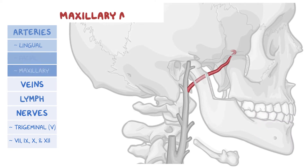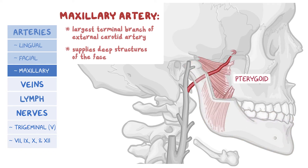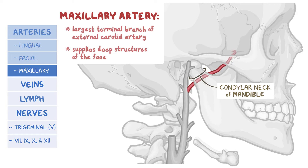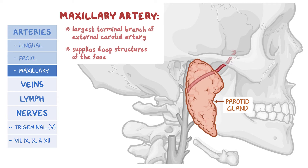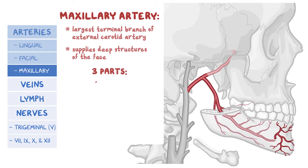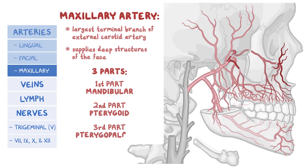Third, the maxillary artery, which is the largest terminal branch of the external carotid artery, supplies deep structures of the face, including the mandible, pterygoid, infratemporal fossa, and segments of the pterygopalatine fossa. It arises posteriorly to the condylar neck of the mandible within the parotid gland, then exits and passes anteriorly between the ramus of the mandible and the sphenomandibular ligament within the infratemporal fossa. As it passes through the infratemporal fossa, the maxillary artery can be divided into three parts: first, the mandibular part; second, the pterygoid part; and third, the pterygopalatine part.